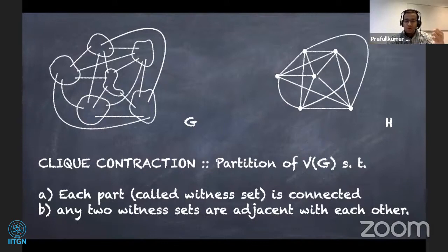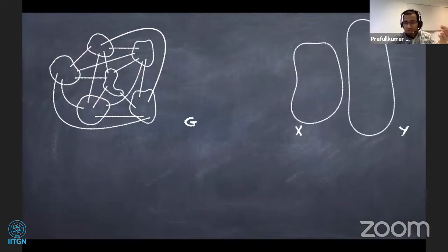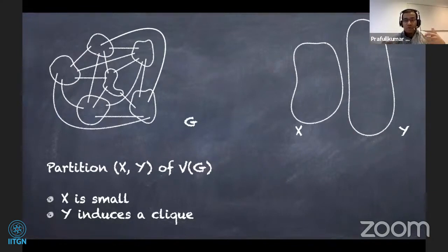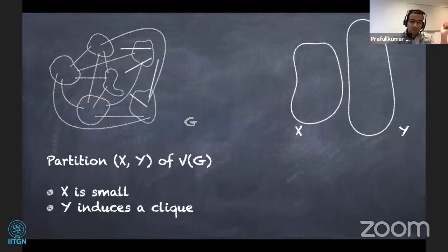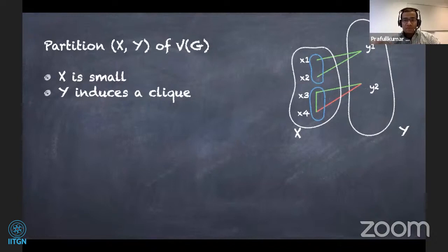Let's look at the clique contraction problem. We can think of it as a partition of V(G) such that each part — called a witness set — is connected, and any two witness sets are adjacent with each other. Now that we have applied reduction rule one, we know there exists a partition where X is a small set and Y induces a clique. Since X is bounded by at most 2k, the no-polynomial-kernel part of clique contraction comes from the Y part.